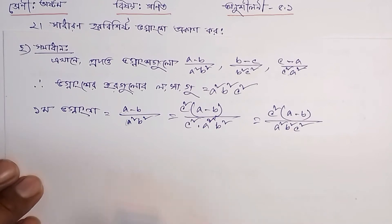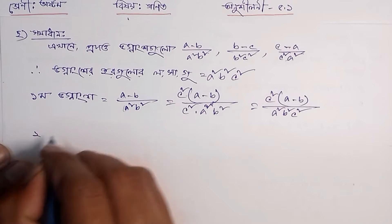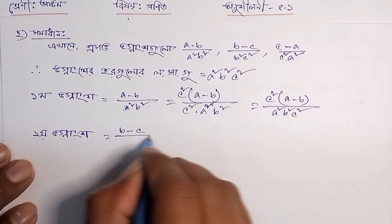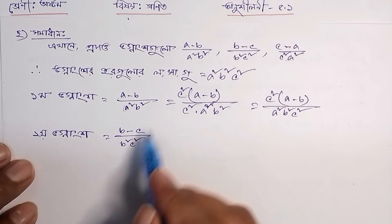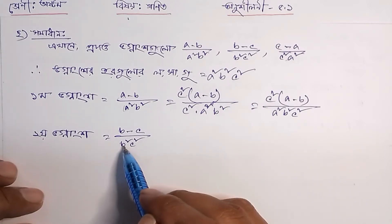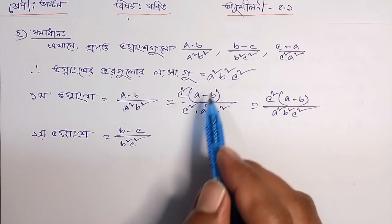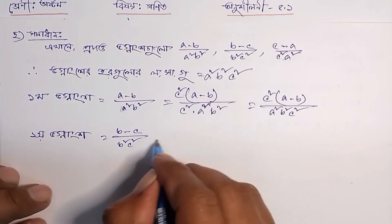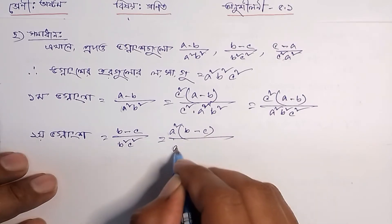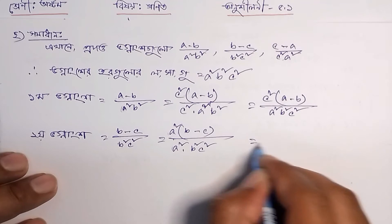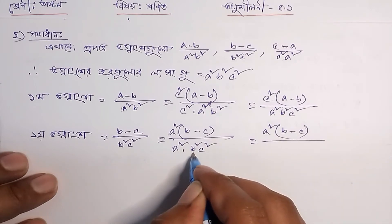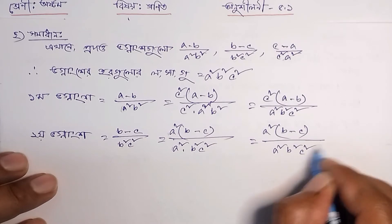is equal to (b minus c) divided by (b² c²) square 2 square 6 square divided s square into (b minus c) divided by s² into (b² c²) is equal to A² into (B minus C) divided by (A² B² C²). So,